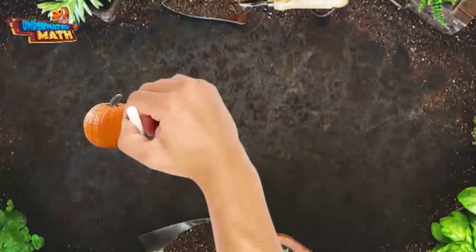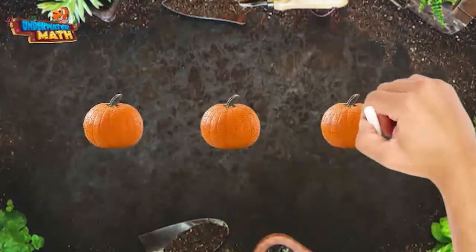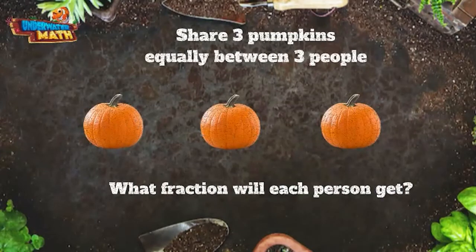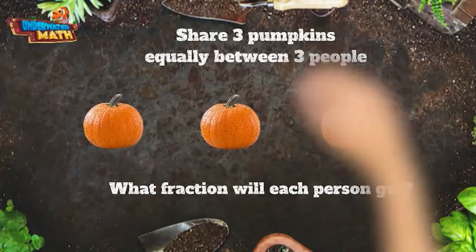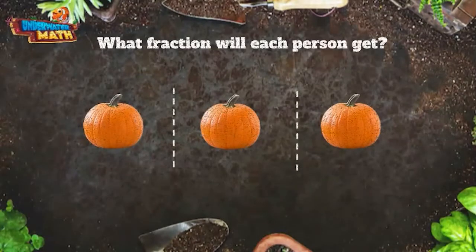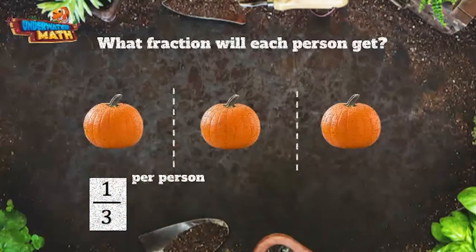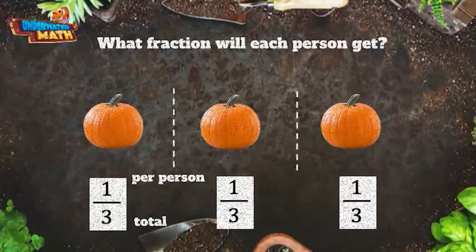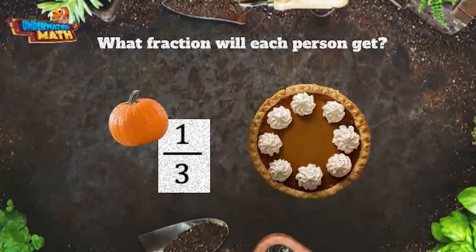We have one more thing in the garden to share. There are three pumpkins to share equally between three people. What fraction of the pumpkins will each person get? Let's divide these pumpkins into three groups. There is one pumpkin in each group, so our fraction is one third. And we got a very yummy pumpkin pie out of it.